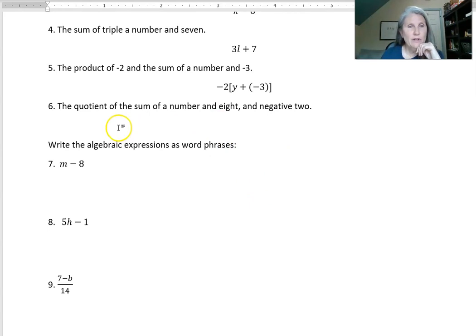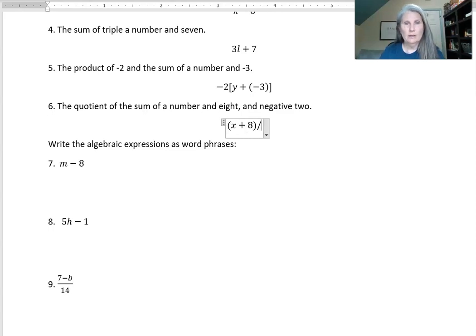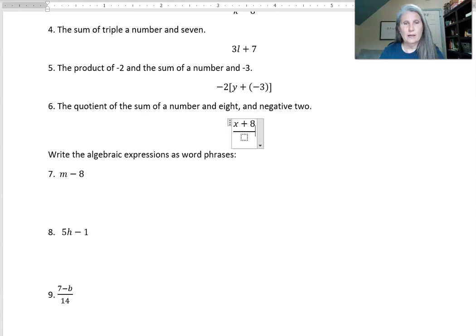Number six, the quotient of the sum of a number and eight, and negative two. When I talk about a quotient I'm going to use the fraction bar. So I'm going to say the sum of a number and eight, I'm going to do x plus eight, and then negative two. I'm using Microsoft Word equation editor by the way which allows me to type these in nicely. So it's a quotient and on the top is the sum of a number and eight - when we say a sum we don't really have to worry as much about the order - and then negative two is what we're dividing by. So this looks like sum of a number and eight and negative two, and it's a quotient which looks like a fraction overall.